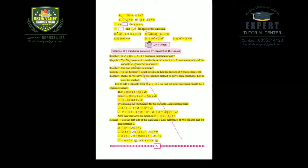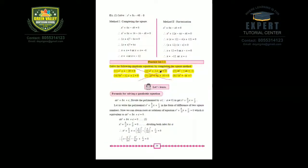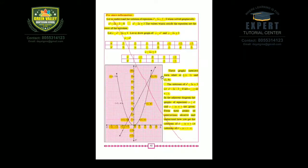On page number 37, certain content is deleted. Page 38 can also be deleted. On page number 39, in Practice Set 2.3, the question 'Solve the following quadratic equation by completing the square method' is deleted — this question will not come in your exam. Page 41 has nothing deleted, but page 42 is deleted.